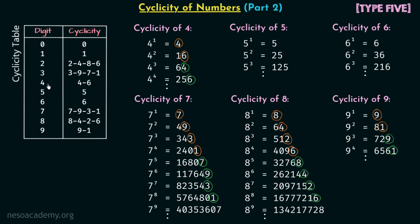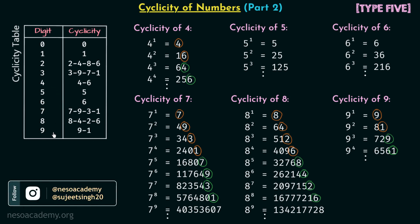Like digit 4, we are getting an interval of 2 in the case of digit 9. In this way we have our complete cyclicity table, and in the upcoming lectures we will derive a few more conclusions from this table and solve some good questions.